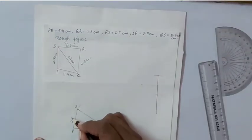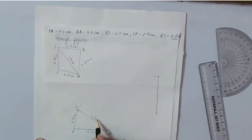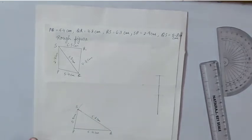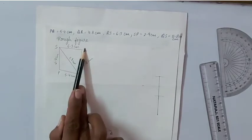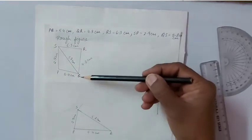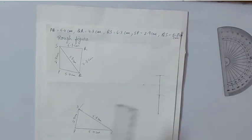PS is 2.9 centimeter. QS is 5.8 centimeter. Now we need to draw a line segment SR 6.3 centimeter and QR 4.8 centimeter.